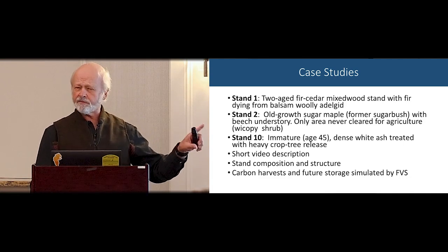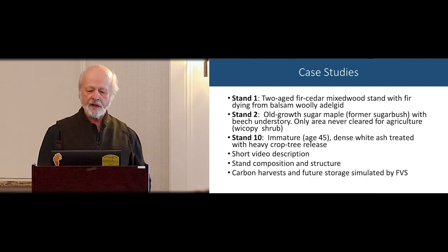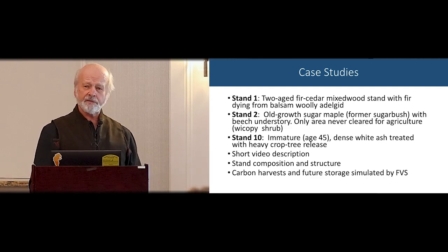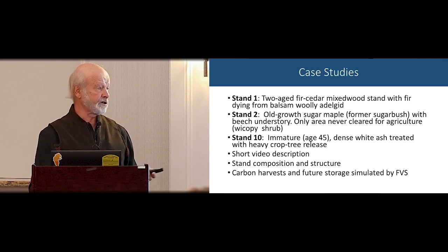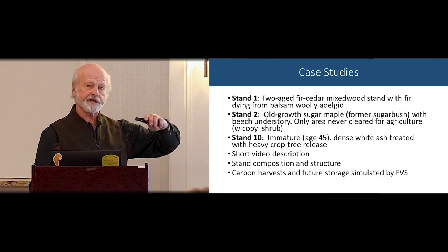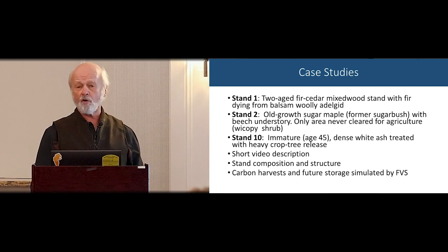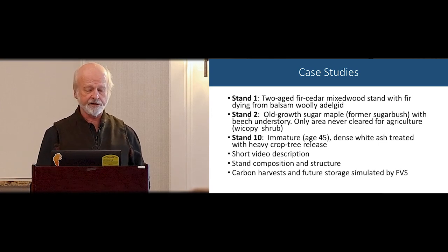Three case studies: Stand One is a softwood shelterwood mixed-wood stand, mostly fir and cedar. The second is an old-growth sugar maple stand with 10 species, dominated by big maple — an old sugar bush, never cleared for agriculture. The final one is a young, immature, almost pure white ash old-field stand. We're going to look at what we did to those, the carbon consequences, and then draw some conclusions.